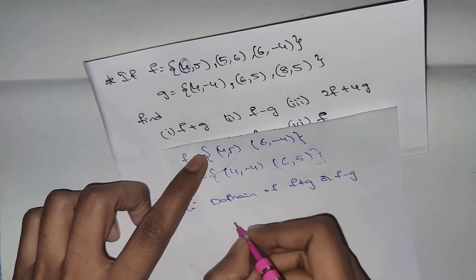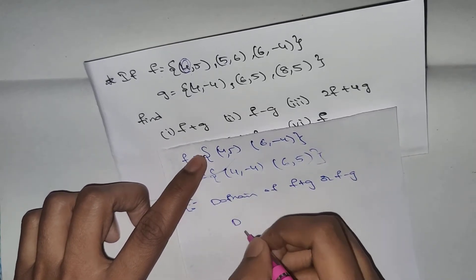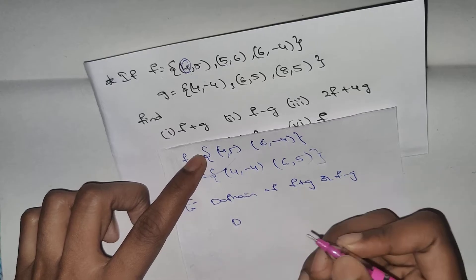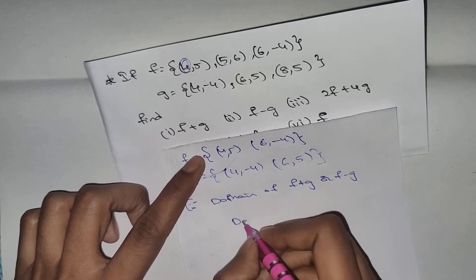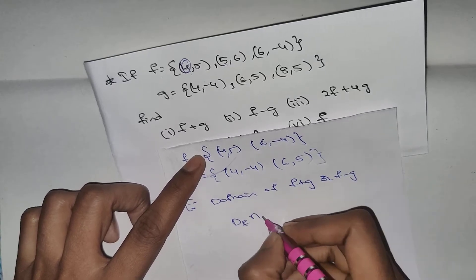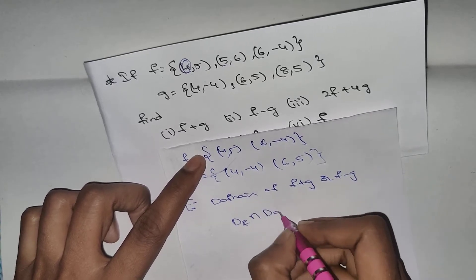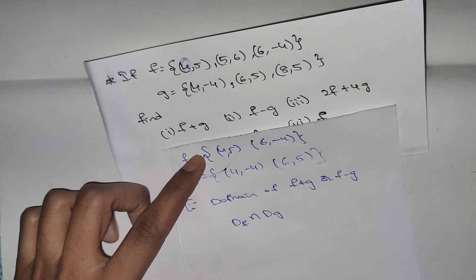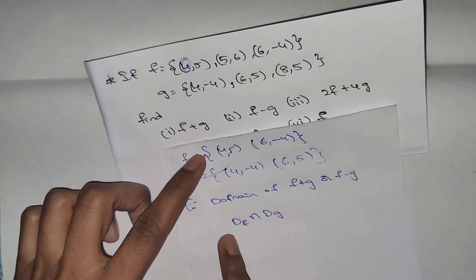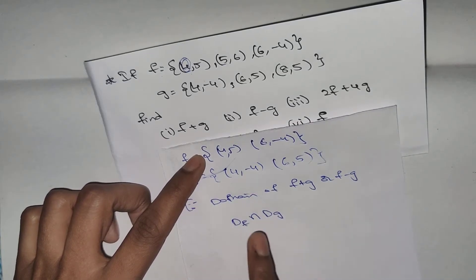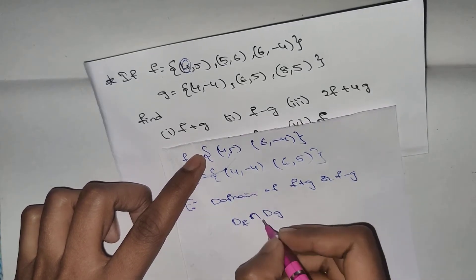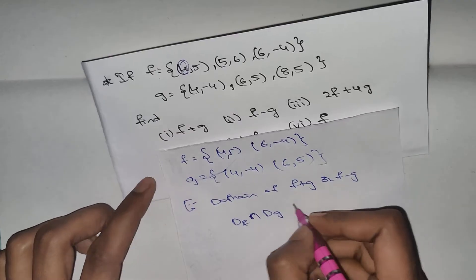This is domain. This is the same — DF intersection. DF and domain of F, intersection. Domain of G. So, we will solve the problem.